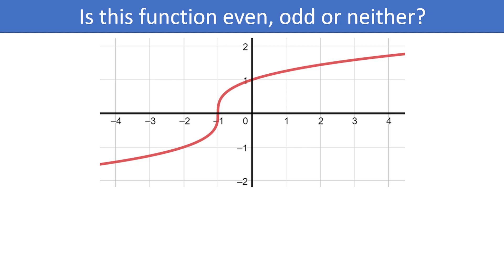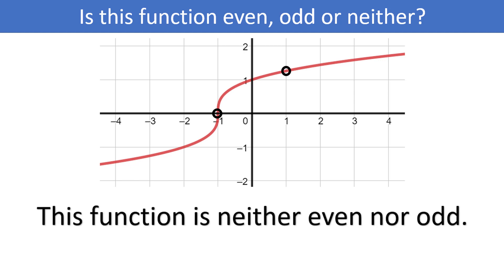What do you think about this function — even, odd, or neither? Well, it kind of looks like an odd function by its shape, but let's check a few points. It looks like we have the point 1 and something just above 1 on the graph. If it were odd we should have the corresponding point, but we don't. Since opposite inputs do not generate opposite outputs, this is not an odd function. It's also clearly not an even function, so this function is neither even nor odd.